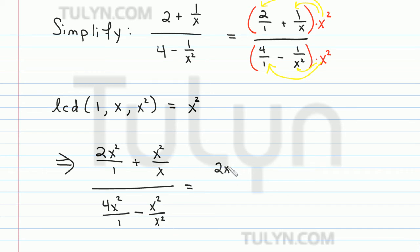So now we can simplify. 2x squared over 1 is just 2x squared. And then x squared divided by x, you can rewrite that as x times x over x. And so one of the x's will cancel out with the one in the denominator. So what we're left with is just x. And then in the denominator of the complex fraction, we have 4x squared minus 1.